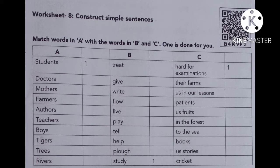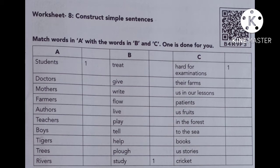The words in column B are the verbs. Treat is the verb. Then: give, write, flow, live, play, tell, help, study, flow. These are the verbs — the action words. We can use first a word from column A, then a verb from column B, then the other words from column C.